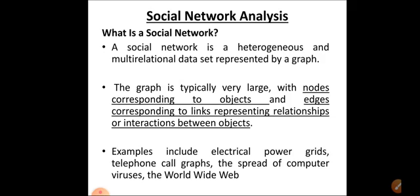What do you mean by a social network? It is a heterogeneous and multi-relational data set which is represented by a graph. A graph consists of nodes and edges, where nodes represent objects and edges represent the links or interactions between the objects.